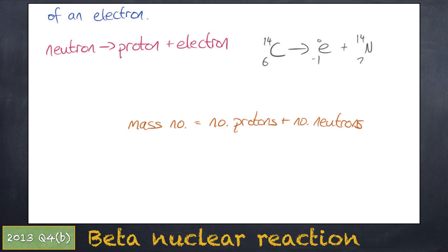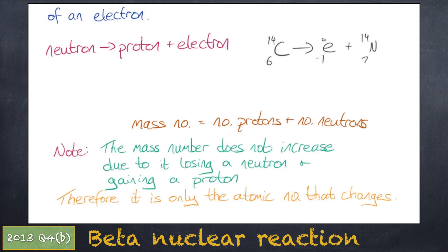Although a proton has been created, the mass number remains the same as the nucleus is losing a neutron. They cancel each other out. Find the element the atomic number corresponds to in the periodic table. In this case the element is nitrogen.